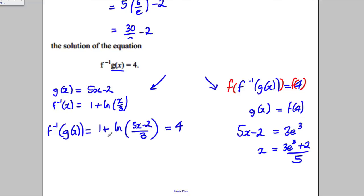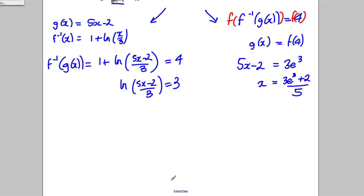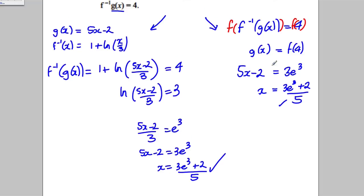So take away 1 of both sides, so ln((5x-2)/3) is going to be equal to 3. Take exponential of both sides. Times both sides by 3. Add 2 and divide by 5. We get the same thing. I think that was significantly easier with a bit of thought there in advance. And we're done for this question.